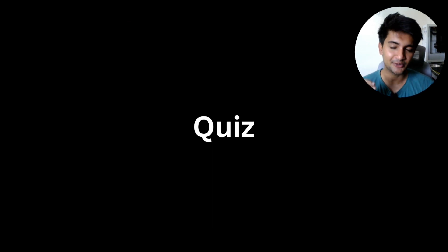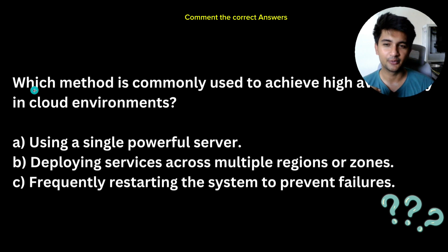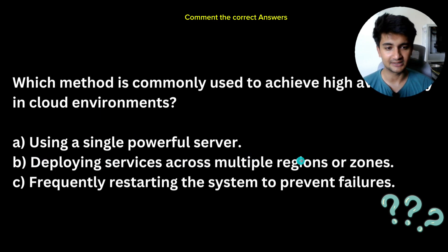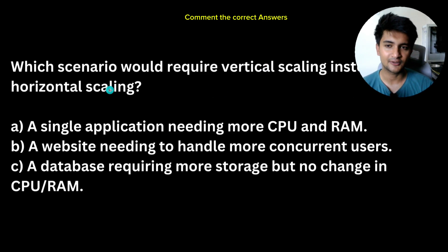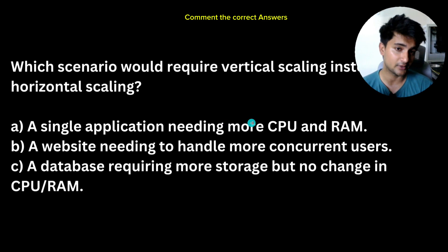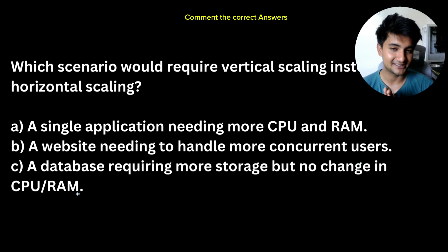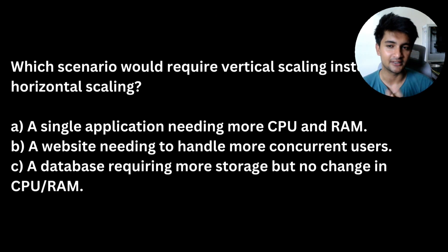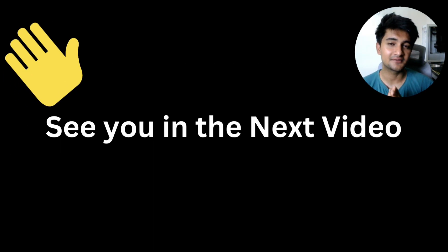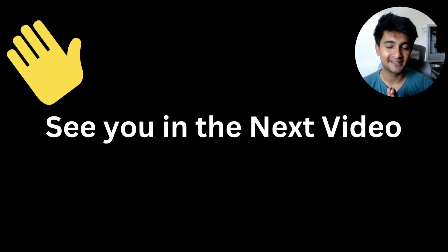Before we end, here's a quick quiz. First question: which method is commonly used to achieve high availability in a cloud environment? Options are: using a single powerful server, deploying services across multiple regions or zones, or frequently restarting systems to prevent failures. Second question: which scenario requires vertical scaling instead of horizontal scaling? Is it when a single application needs more CPU and RAM, a website needs to handle more concurrent users, or a database requires more storage but no change in CPU or RAM? Put your answers in the comments. Also, if you want me to create a project setting up a WordPress website on an EC2 instance, let me know in the comments. See you in the next video.